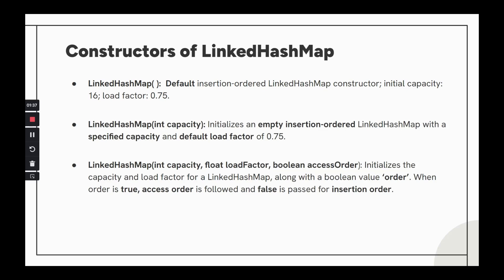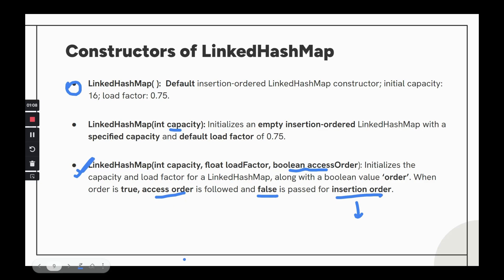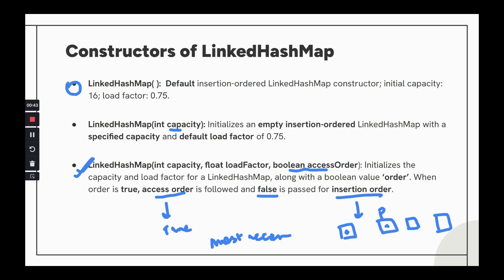There are three important constructors: the default constructor, one that takes an initial capacity, and a third that takes a boolean 'accessOrder' flag, which is false by default. When false, insertion order is followed. When set to true, access order is followed — meaning the most recently accessed element is placed at the end of the LinkedHashMap. So if you recently accessed node P, P moves to the end.